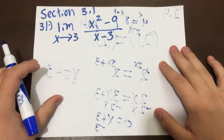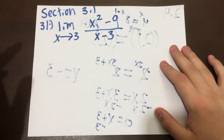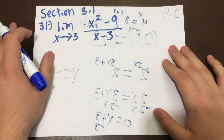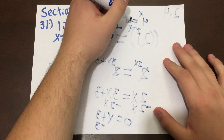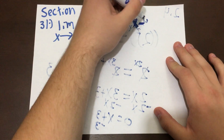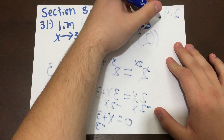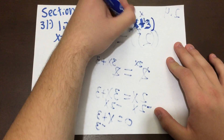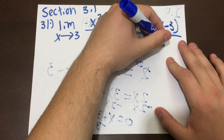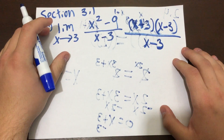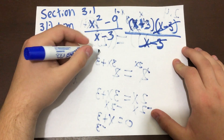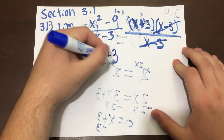So basically what we really want to do right now is simplify this down. So we have x squared minus 9, which if you factor that out, is going to be (x plus 3)(x minus 3) over (x minus 3). You can actually go ahead and cancel out those (x minus 3) terms. So we're just left with x plus 3.